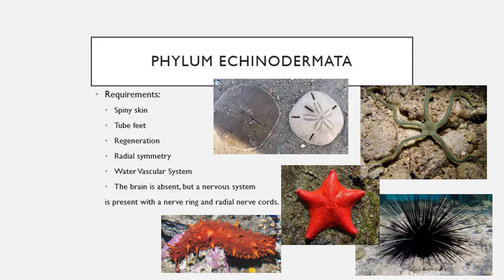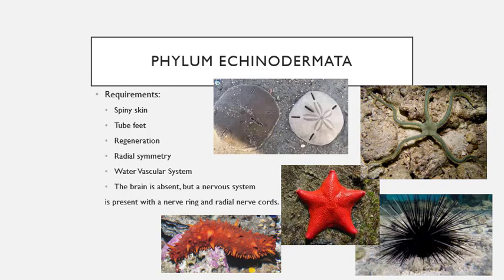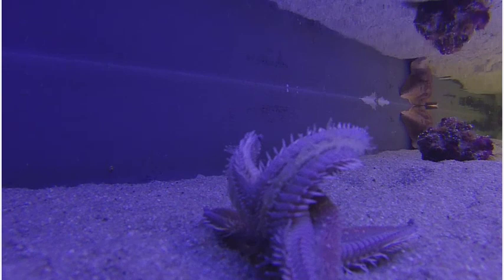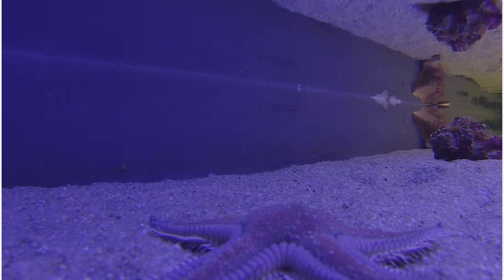Phylum Echinodermata means spiny skin — 'echino' means spiny, 'dermata' means skin. The requirements to be in this phylum are to have spiny skin and have tube feet. Tube feet are like at the bottom of starfish — they almost look like Shrek ears — and there are hundreds of these little tube feet on the bottom of starfish, sea cucumbers, and sand dollars. They're able to move around using what I call a water vascular system, moving water back and forth throughout their body. All phylum Echinodermata are aquatic or marine species — none will live on land.